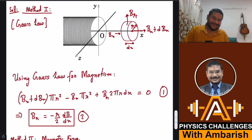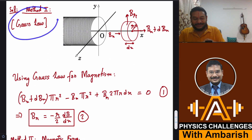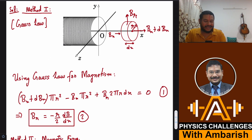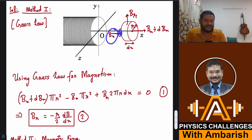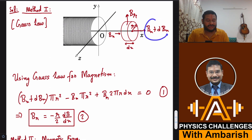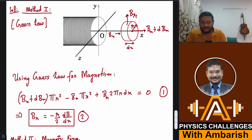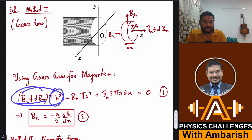Method one is how most people do it — that's the method using Gauss's law for magnetism: the net flux through any closed surface is always zero. At a distance X I have considered a pillbox-shaped Gaussian surface, a small cylinder. At the left face the magnetic field is B(X), and on the right surface the magnetic field is B(X) + dB(X), a slight change on the right side. The radial component of field on the curved surface is B_R.